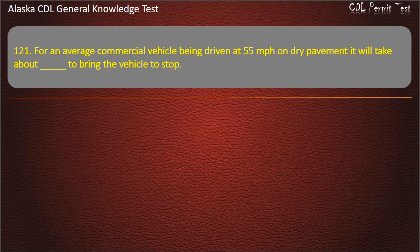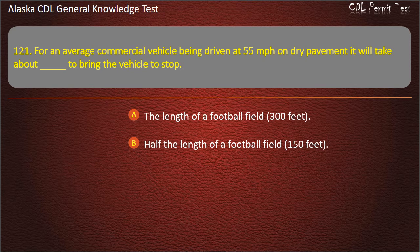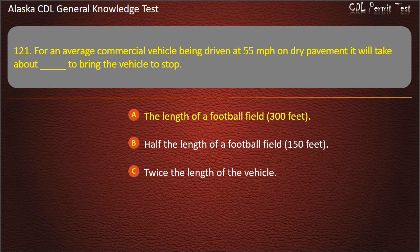Question 121. For an average commercial vehicle driven at 55 mph on dry pavement, it will take about the length of a football field — 300 feet — to bring the vehicle to a stop, half the length of a football field at 150 feet, or twice the length of the vehicle. Answer: The length of a football field, 300 feet.